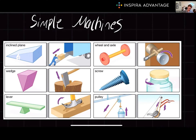Let's first focus on the lever. A lever is a rigid bar that pivots around a fixed point called a fulcrum. There are three classes of levers, each with different arrangements of the fulcrum, input force, and output force. Levers can increase force, change the direction of force, or both, depending on their configuration.